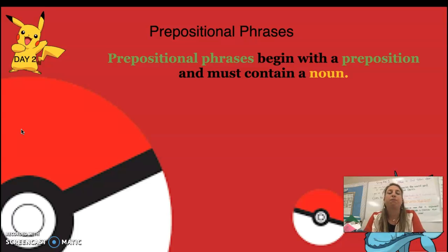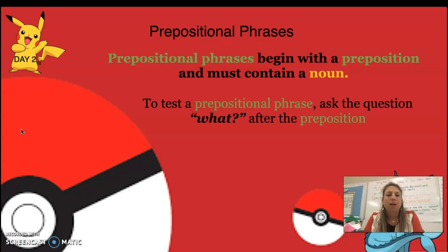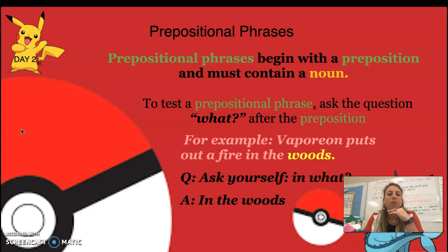Prepositional phrases begin with a preposition and they must contain a noun. To test a prepositional phrase, we ask ourselves the question 'what' after the preposition — like 'what was down?' or 'what was around?' For example: Vampirine puts out a fire in the woods — ask yourself, 'in what?'